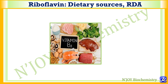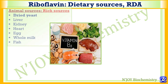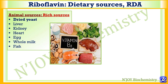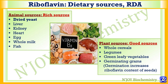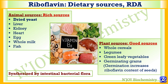Now let's see the dietary sources and RDA of riboflavin. Animal sources are rich sources, including dried yeast, liver, kidney, heart, egg, whole milk, and fish. Plant sources are also good sources, like whole cereals, legumes, green leafy vegetables, and germinating grams. Germination increases the riboflavin content of seeds. It can also be synthesized by intestinal bacterial flora. So it is derived from both animal and plant sources.